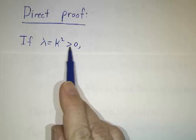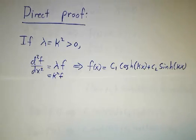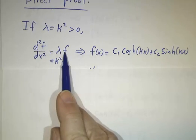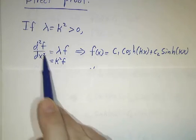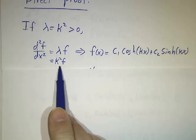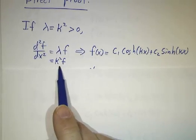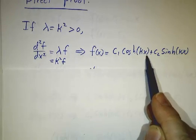So if κ² is a positive eigenvalue, then our function would have to solve second derivative of f is λf. In other words, second derivative of f is κ² times f. But we know what the solutions to second derivative equals κ²f are. They're coshes and sinches of κx.